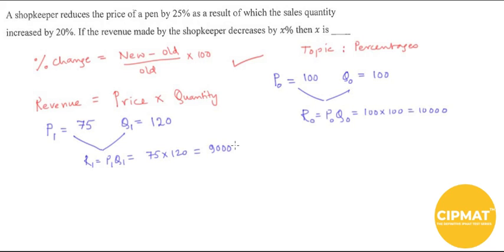Now I want to calculate the percentage change in revenue. That will be new minus old, divided by old, into 100. So that is 9,000 minus 10,000, divided by 10,000, into 100. This will be equal to minus 10%.